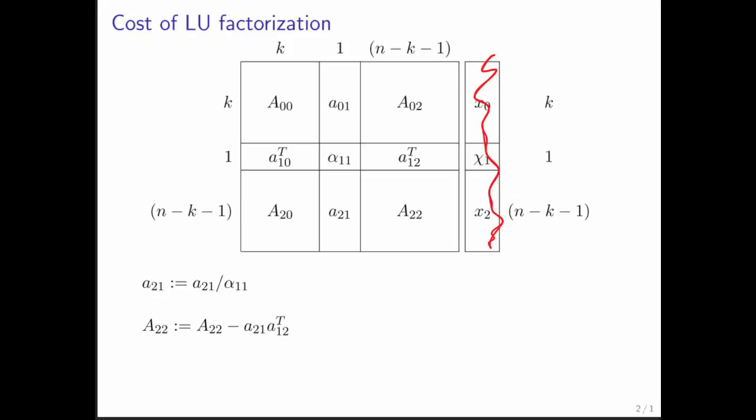Think about the algorithm that computes the LU factorization overwriting A, where below the diagonal we store L. We don't store the diagonal of L because it's all ones, and on and above the diagonal of A, we store upper triangular matrix U. The computations we have to perform in each iteration are given here. The question now is, what is the cost of each of those operations as the algorithm proceeds?